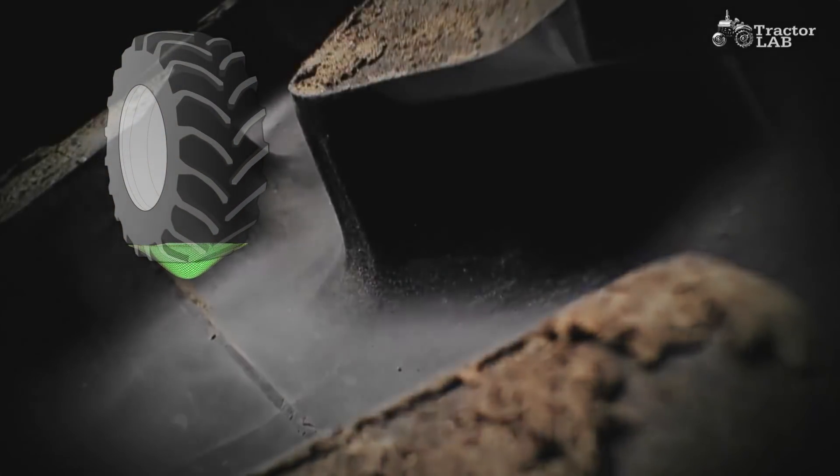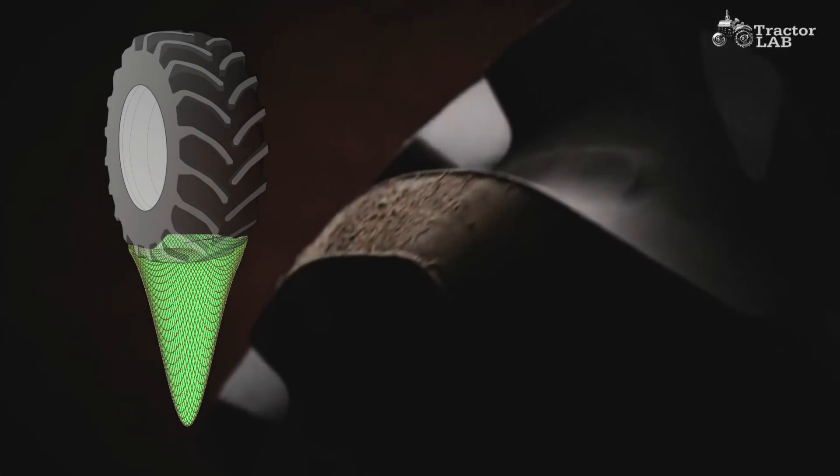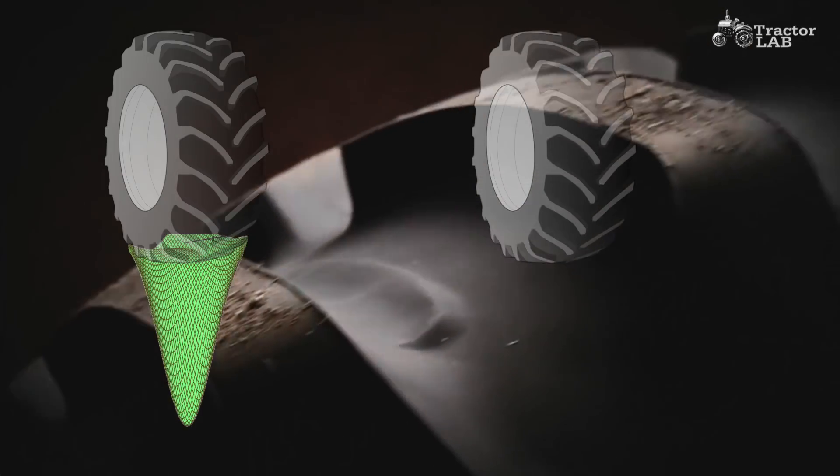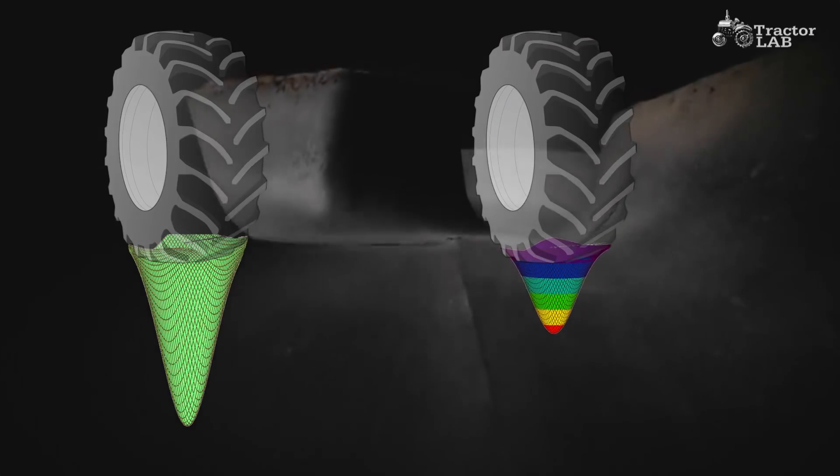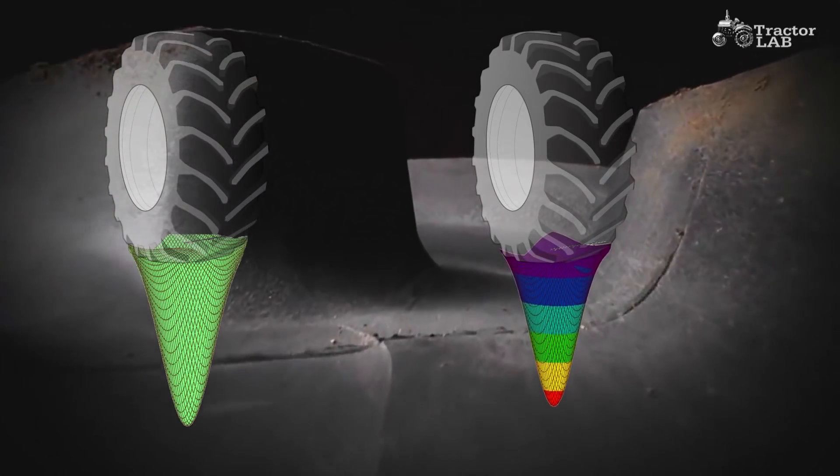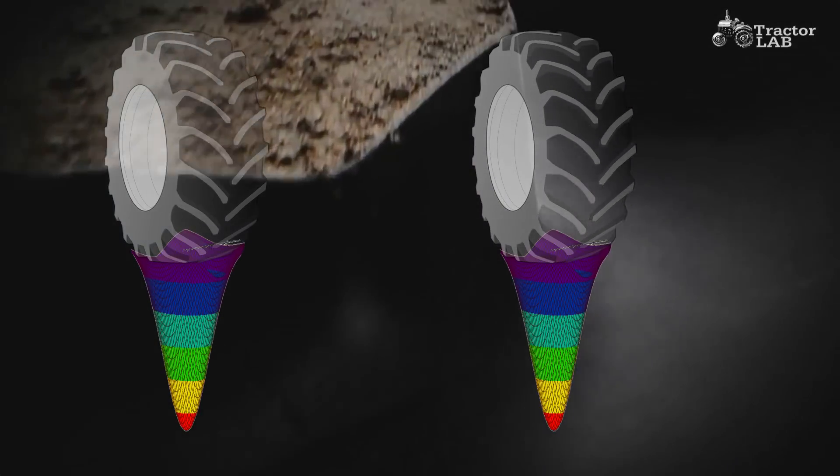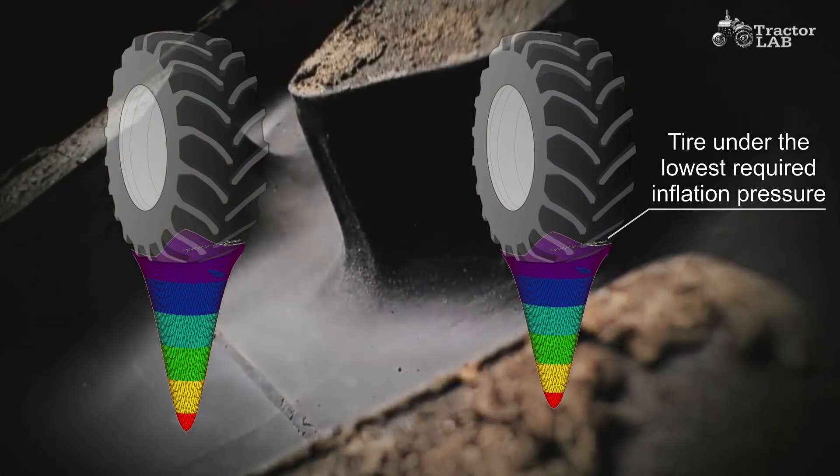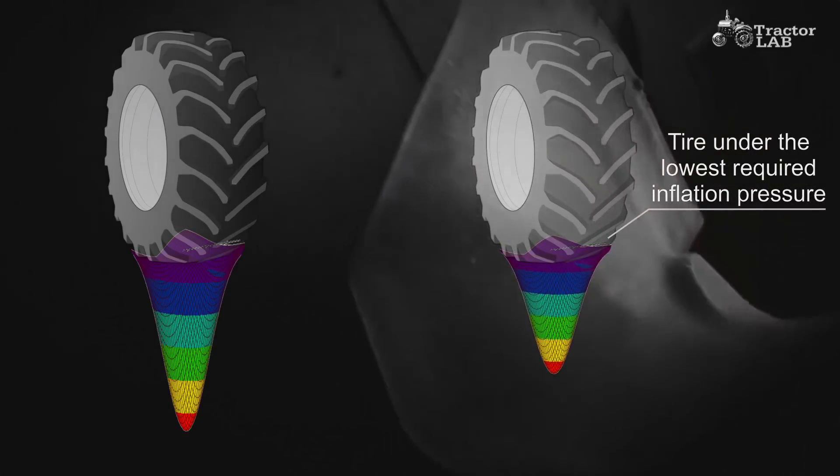There are two different concerns. First, subsoil compaction which is dependent on the total weight of the vehicle, and second, surface disturbance which is highly related to the average pressure between the tire and soil. For a given load, the tire that will carry the load at the lowest required inflation pressure will provide the greatest flotation and the least surface disturbance and compaction.